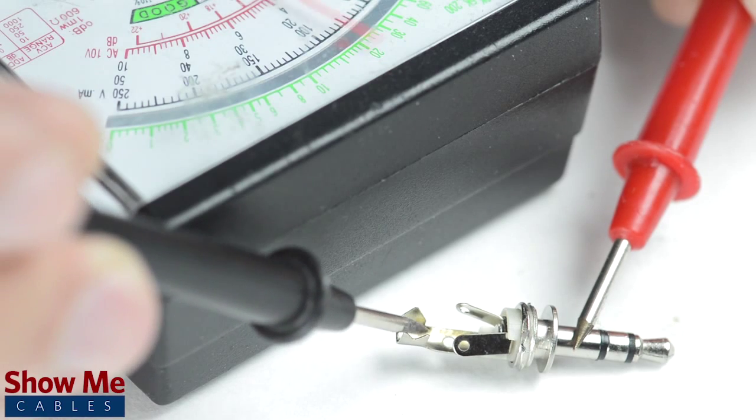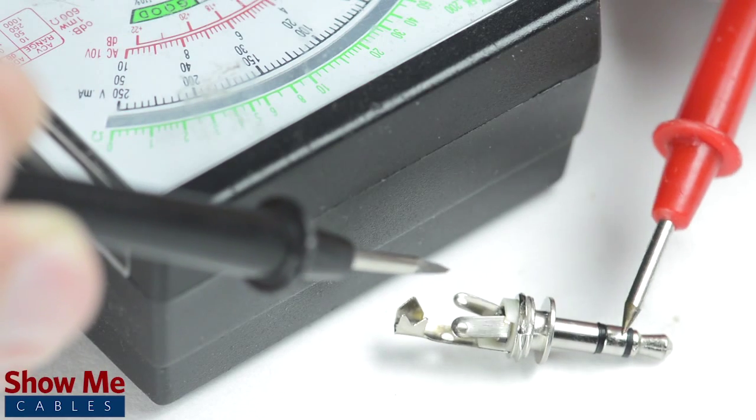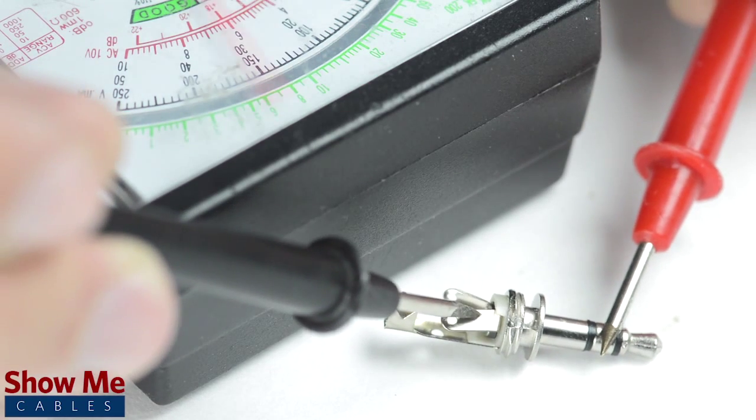You can also use the multimeter to test how the tip, ring, or sleeve relate to the tabs on the back of the connector.